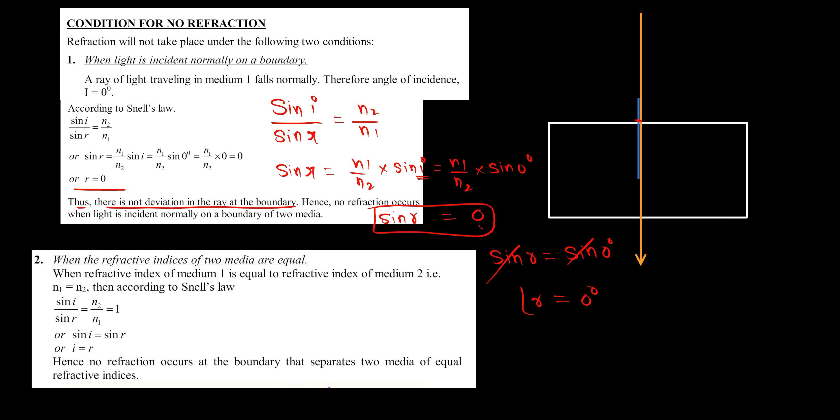Since sine r equals zero, sine r equals sine 0, removing the sine from both sides gives angle of refraction equal to zero degrees. This indicates there is no deviation in the ray at the boundary, hence no refraction occurs when light is incident normally on a boundary of two media.